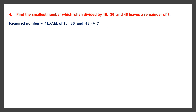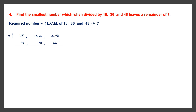So first we find the LCM of 18, 36 and 48. Let's begin by dividing by 2. 2 nines are 18, 2 into 18 is 36, 2 into 24 is 48. Now we continue with 2. Here 9 we can't divide, so we bring it down as it is. Then we have 18: 2 nines are 18. We have 24: 2 into 12 is 24.